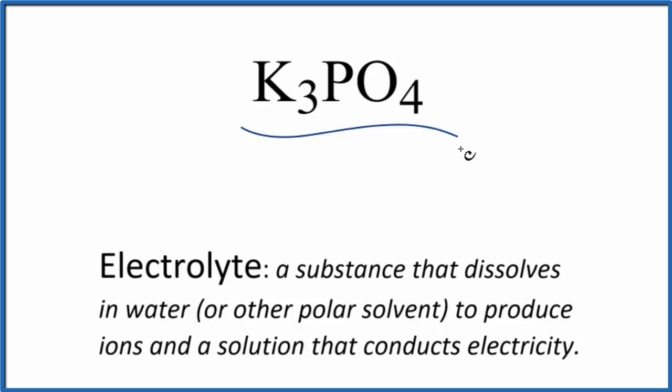When we look at potassium phosphate here, we know that an electrolyte is a substance that dissolves in water and produces ions. And these ions conduct electricity.